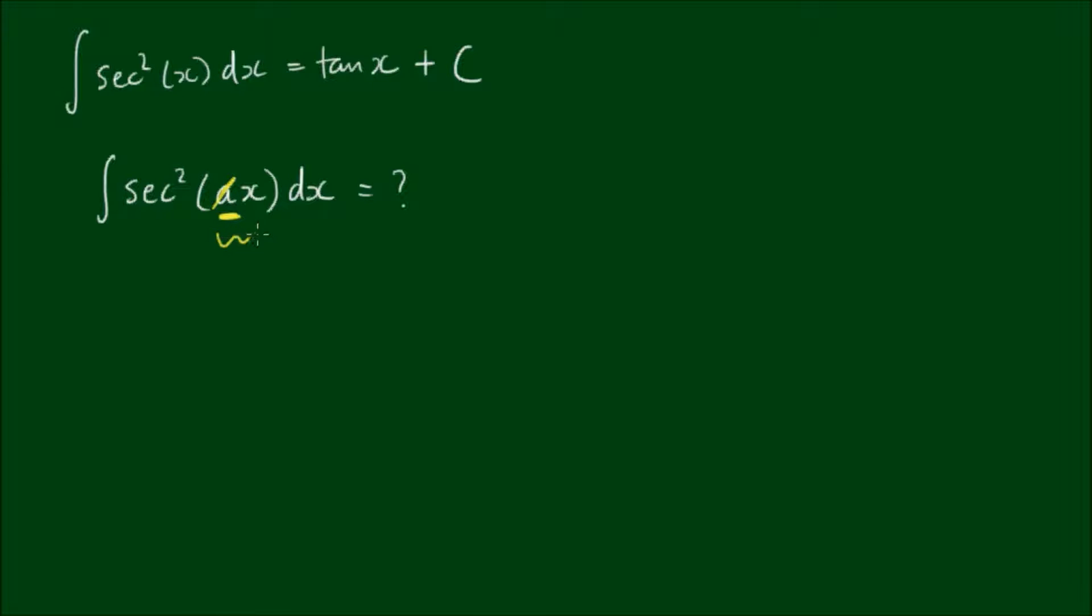So let's substitute ax for something else. And to do that, we'll let another variable, let's say u, equal the term inside the parentheses. So let u equal ax. Okay, so if we substitute ax for u, we also need to find a substitute for this dx here. And we do that by taking the derivative of u.